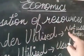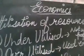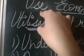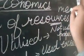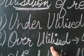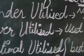Underutilized ka matlab hai ki aapka ek resource aapne use nahi kiya properly. Utilization ka matlab hai use — use of resources, yani jo sansadhan aapke paas available hai. Underutilized means not used properly, is mein wastage hogi. Overutilized means kisi cheez ka excessive use kar lena. Optimal utilized means best use.